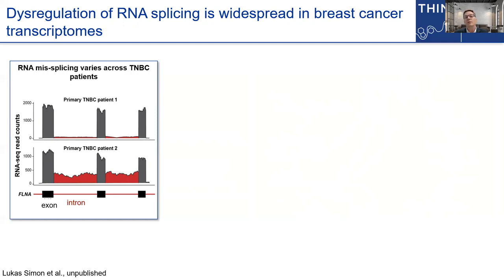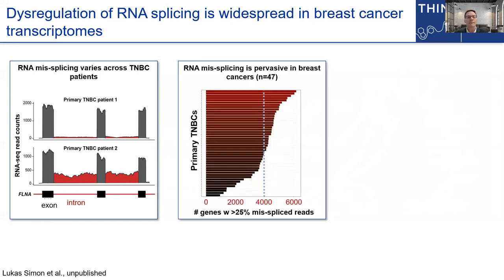Shown here is a recent analysis where Lucas Simon, a computational colleague from Baylor, examined global RNA processing defects in RNA-seq data from a cohort of primary TNBCs. First, as you can see on the left, some TNBCs harbor really extensive misplicing as denoted by intron retention, while others do not — telling us there are perhaps underlying differences in these tumors in the ability to splice or quality control their RNA. Second, taking a transcriptome-level view, defective splicing doesn't occur at just a few genes but across thousands of mRNAs, with more than half of these TNBCs harboring misplicing at more than a quarter of their transcriptome.